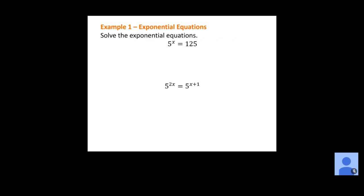Example one: we want to solve this exponential equation. We've got 5 to the x equals 125. Any time you can get the same base on both sides of your equation, that's the route you want to take. Since 125 can be rewritten with a base of 5, I'm going to keep my 5 to the x and rewrite 125 as 5 to the third power. Now since I have the same base on both sides, the exponents have to be equal, so x equals 3.